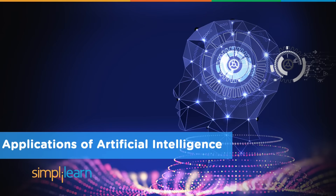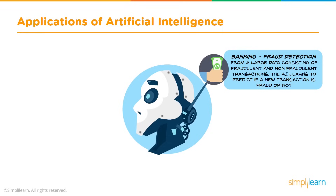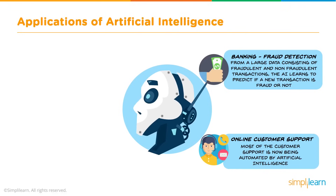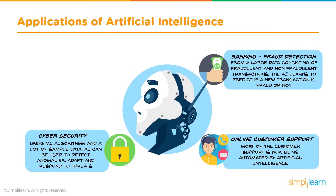Applications of Artificial Intelligence. Let's take a look at some of today's commercial and business uses for AI. We have banking fraud detection: from a large dataset of fraudulent and non-fraudulent transactions, the AI learns to predict if a new transaction is fraud or not. Online customer support: most customer support is now being automated by Artificial Intelligence. Cybersecurity: using machine learning algorithms and a lot of sample data, AI can be used to detect anomalies, adapt, and respond to threats.